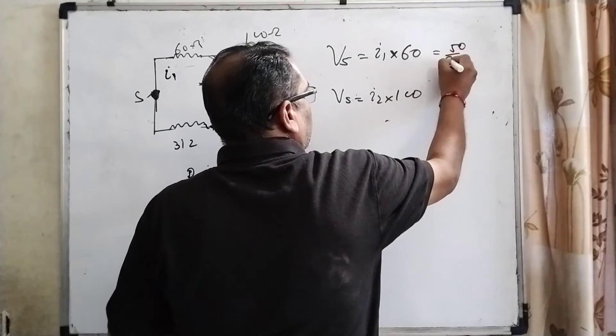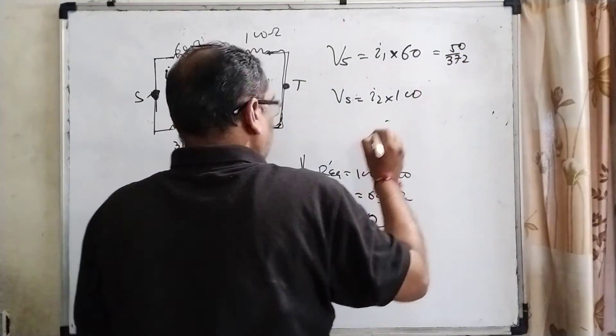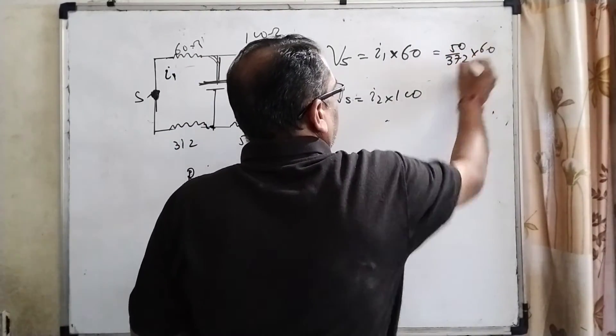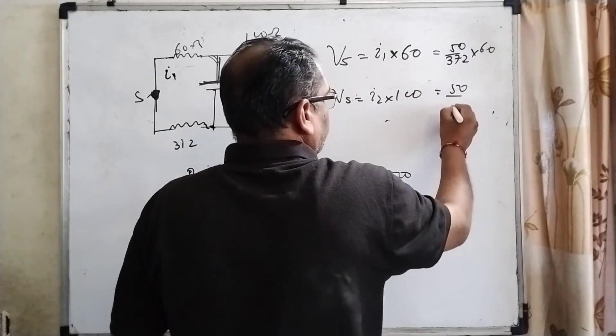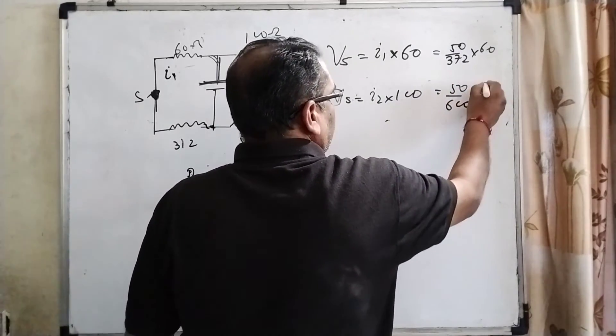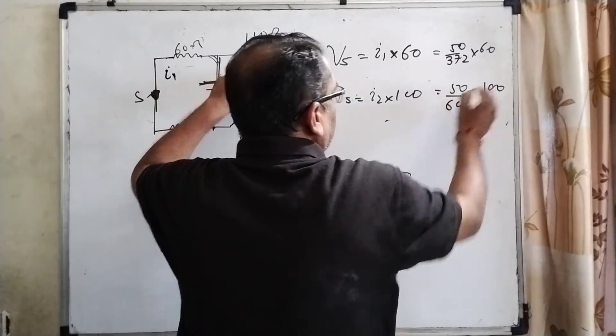What is I1? I1 is 50 divided by 372 times 60. And it's 50 divided by 600 times the resistance 100.